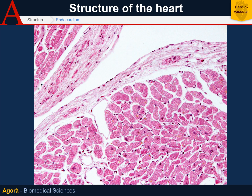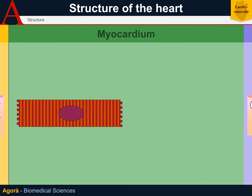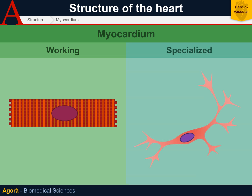Now let's talk about the myocardium. The myocardium can be divided into two types of tissues: the working myocardium, its pulsating part, and the specialized myocardium, its conduction and transmission system. We have already talked about the specialized myocardium in the video regarding the conduction system of the heart.